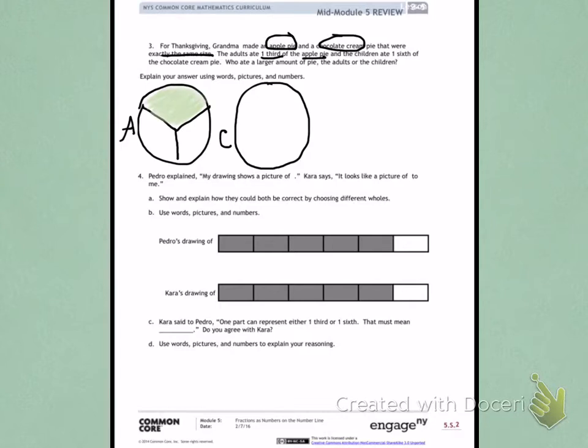Then it tells me the children ate one-sixth of the chocolate cream pie. So again, I'm going to carefully partition, starting with thirds, and then extending each of the lines of the thirds to show what the children ate.